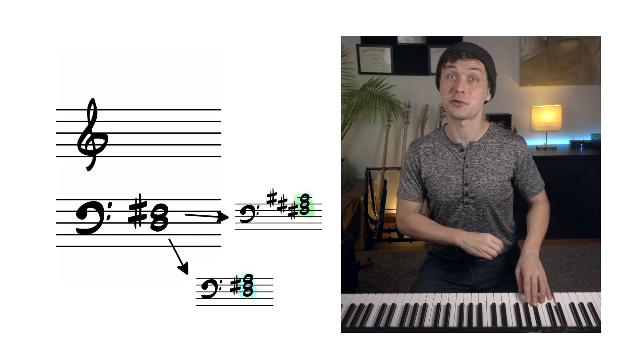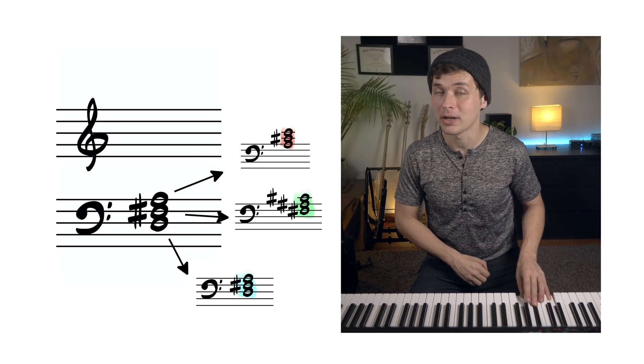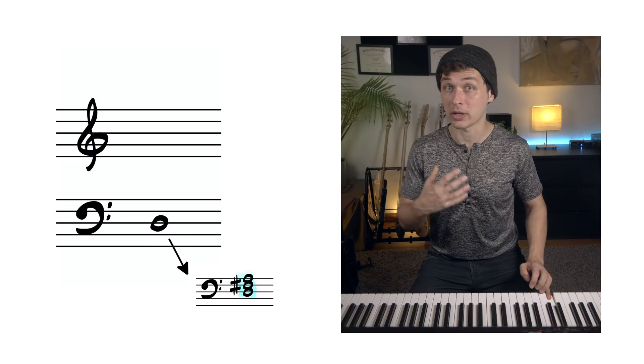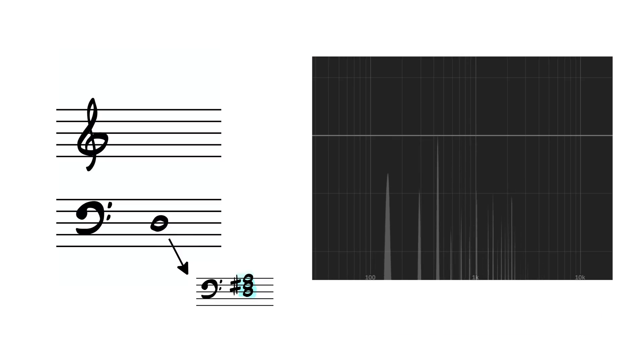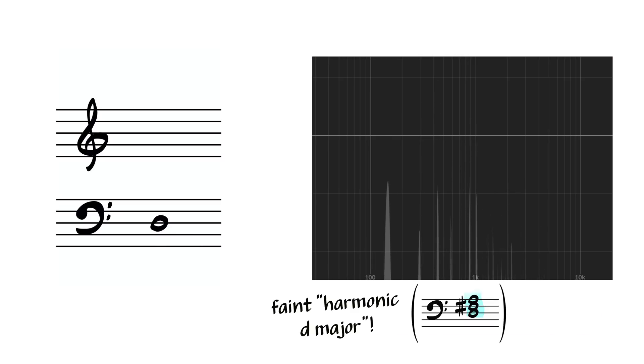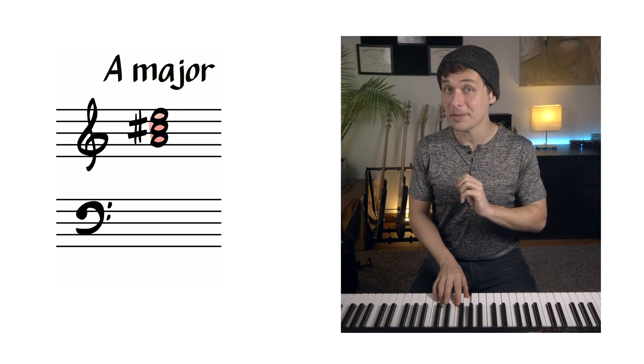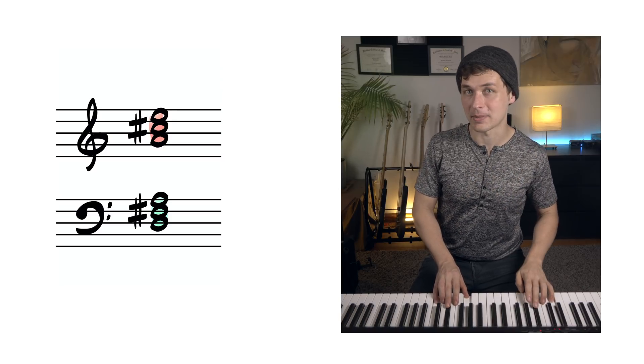So we're hearing D-major, F-sharp major, and A-major. If we play the note D and look at the waveform, you can actually see the extra notes that are required for a D-major chord in the waveform itself: D, F-sharp, and A.